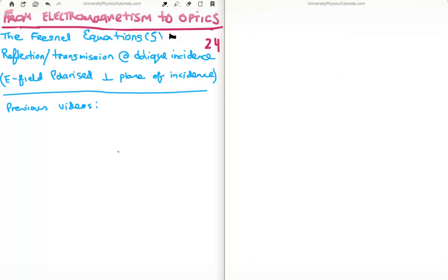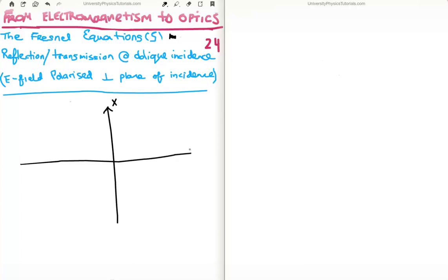The first thing I'm going to do is sketch what's happening — light being incident on some sort of an interface at oblique incidence. Let's say this is the x-axis and we have the z-axis. The light is incident at the point z equals zero. What we want is that the electric field is perpendicular to the plane of incidence. The plane of incidence is the x-z plane. The y-axis is also there, though I haven't drawn it.